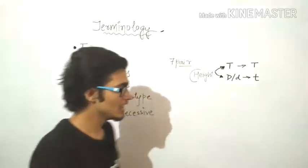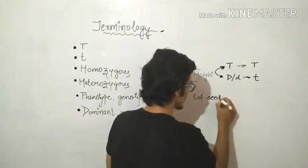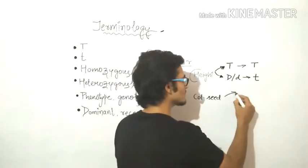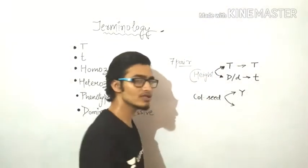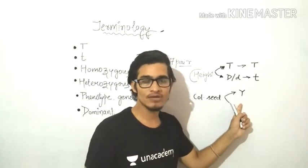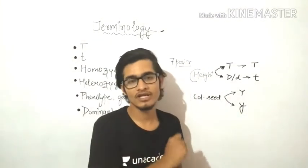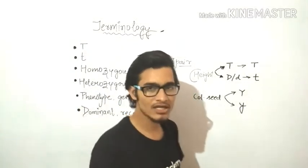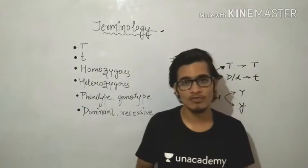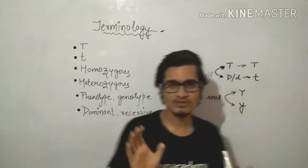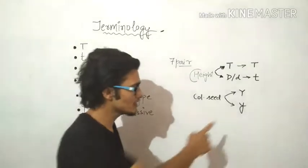If we talk about the color of seeds, there are two types of traits. The dominant one is yellow and the recessive one is green. If the dominant yellow is represented by capital Y, then the recessive must be represented by the same alphabet Y but in lowercase. This is the basic method to make crosses easily and avoid confusion — the dominant and recessive forms are symbolized with the same alphabet but in different styles: uppercase for dominant, lowercase for recessive.